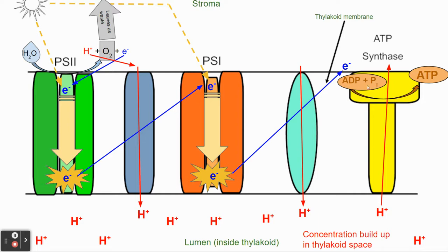So we now have ATP because it's a high-energy molecule. This process happened because hydrogen passed through, giving energy and allowing this process to occur.